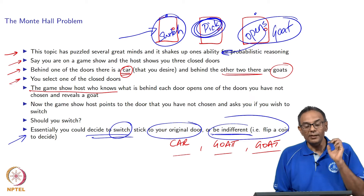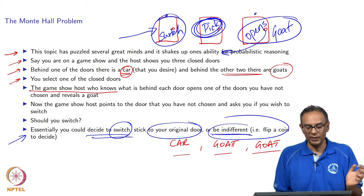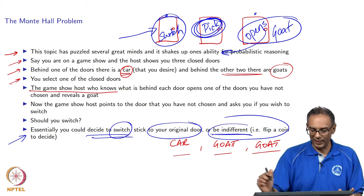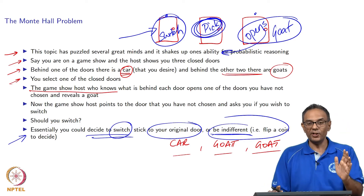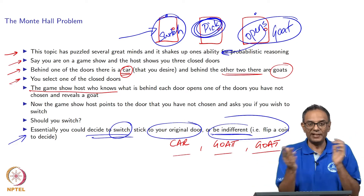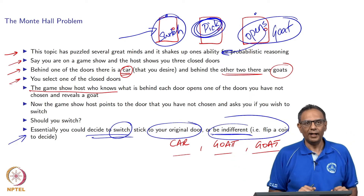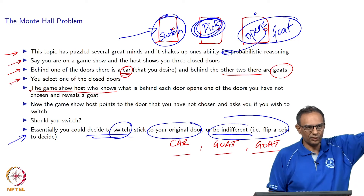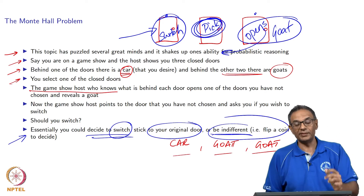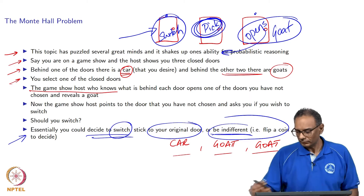Pause the video, think about it, and say what you would do. We will give you the answer in the next slide. One more time: you have three doors. Behind one door there is a goat, behind another there is a goat, behind the third there is a car, but they could be shuffled in any way. You select one door; one of the other two doors does not have a car for sure. The game show host, who knows what is behind each door, opens one of those doors, reveals a goat, and asks: do you want to switch or stick with your original choice?